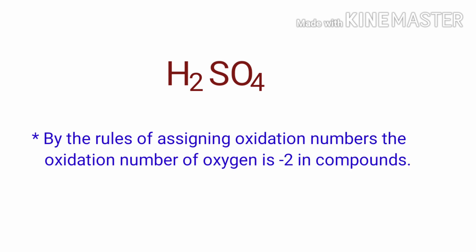By the rules of assigning oxidation numbers, the oxidation number of oxygen is minus 2 in compounds. We can write the oxidation number of the element above its symbol and the total oxidation number of the atoms below its symbol.